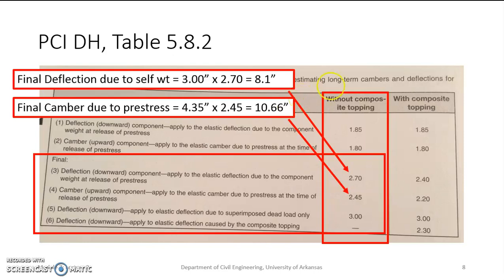Then we have the downward component. This applies to the elastic deflection due to the component's weight at release of pre-stress. So this would be the self-weight. We know that the deflection at release due to the self-weight is 3 inches. We multiply it by this multiplier of 2.7, and we end up with a downward component of 8.1 inches.